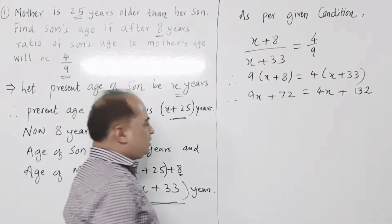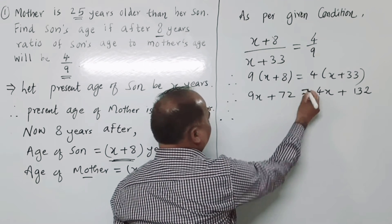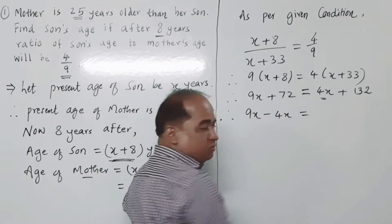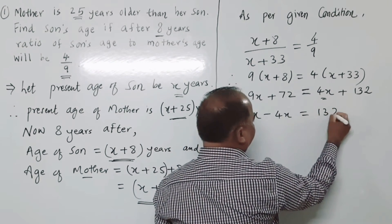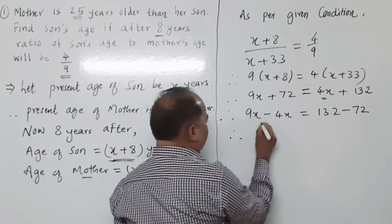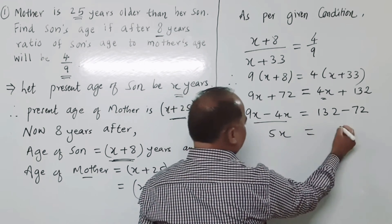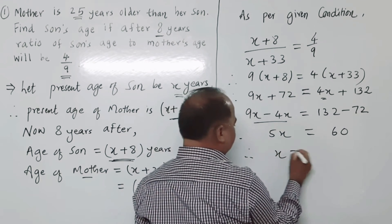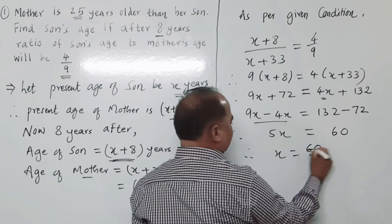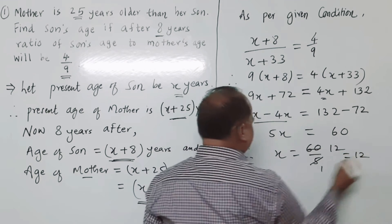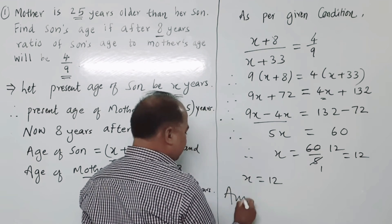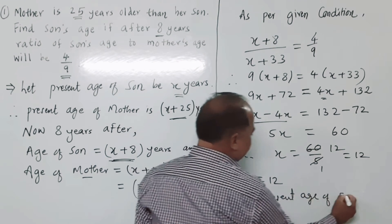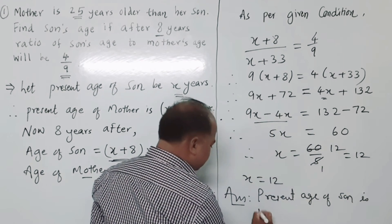Now take the variable on one side and numbers on the other side. So 9x minus 4x equals 132 minus 72. Therefore 5x equals 60. Therefore x equals 60 upon 5, which equals 12. So the present age of the son is 12 years.